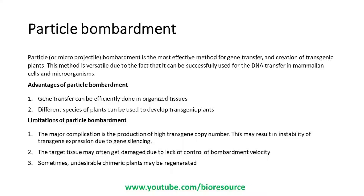Factors that can affect the particle bombardment include the nature of microparticles, the nature of tissue or cells to be transformed, the amount of DNA used, and the environmental conditions and parameters. The advantages are that gene transfer can be efficiently done in organized tissues and different species of plants can be used to develop transgenic plants. The major limitation is the production of high transgene copy numbers, which results in instability of transgene expression due to gene silencing. The target tissue may often get damaged due to lack of control of bombardment velocity, and sometimes undesirable chimeric plants may be regenerated.